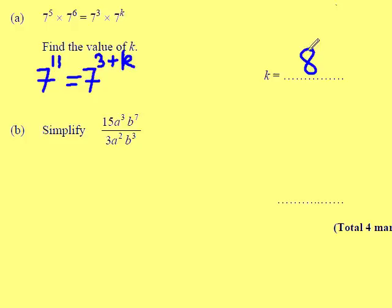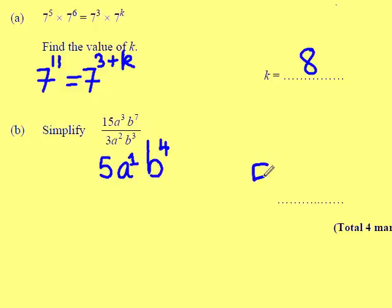Part B. Simplify 15A cubed B to the power of 7, all divided by 3A squared B cubed. I'm dividing the numerator by the denominator. 15 divided by 3 is 5. A cubed divided by A squared — I take the powers away — gives me A to the power of 1. B to the power of 7 divided by B cubed gives me B to the power of 4. In its simplest form it's 5AB to the power of 4.